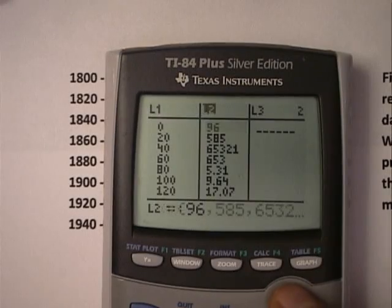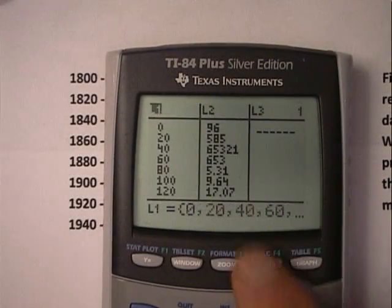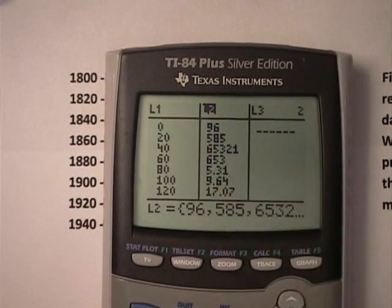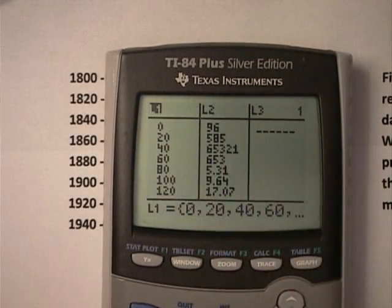You'll see columns of data, lists of data, L1, L2, L3. We're going to put the input values, the years into L1, and the output values, the population for those years in L2. Let's learn how to clear it out.